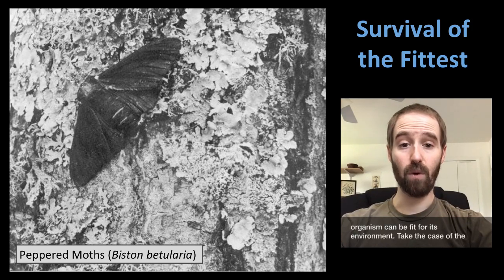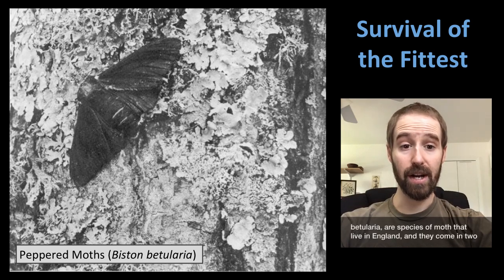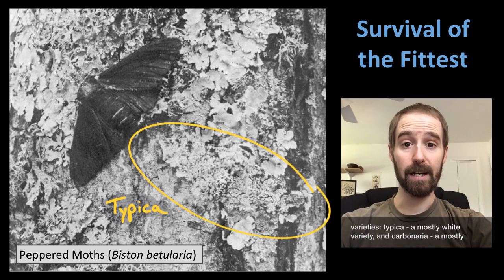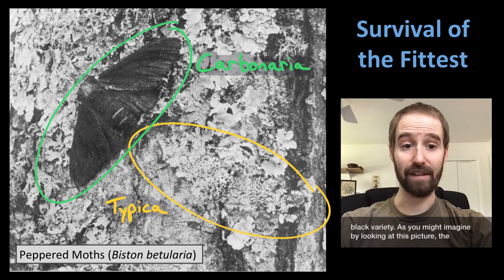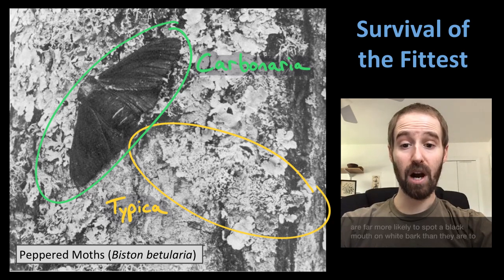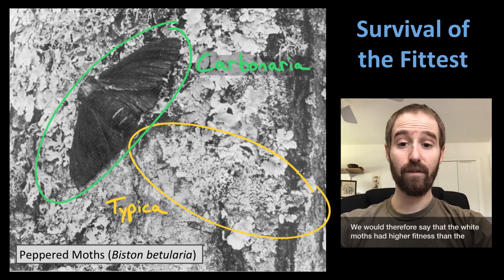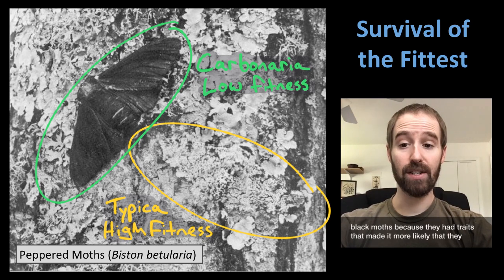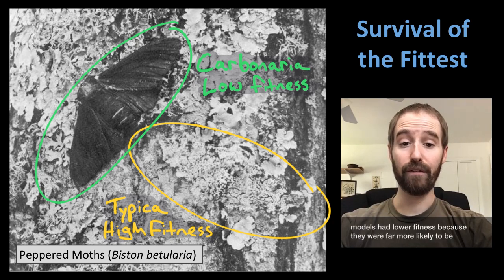There are many different ways that an organism can be fit for its environment. Take the case of the peppered moth, a classic example in evolution. Peppered moths, or Biston betularia, are a species of moths that live in England, and they come in two varieties: Typica, a mostly white variety, and Carbonaria, a mostly black variety. As you might imagine by looking at this picture, the Carbonaria subspecies, the black one, wasn't very common in England because it kind of sticks out like a sore thumb against the mostly white bark of the trees common in this area. Birds who eat these moths are far more likely to spot a black moth on white bark than a white moth on white bark.